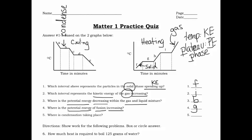Number five: where is condensation taking place? We already labeled that — it's letter B. A couple of other labels: that lower plateau on the cooling curve is freezing, letter G on the heating curve is melting, and the upper plateau on the heating curve is boiling.